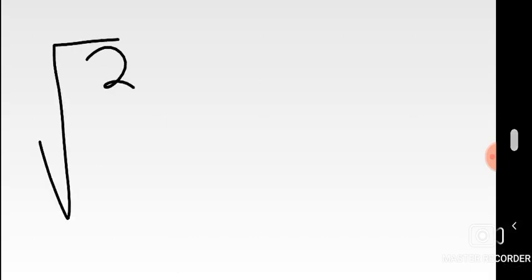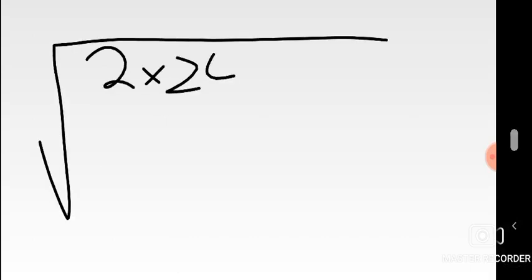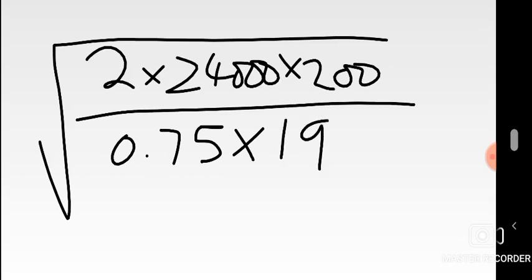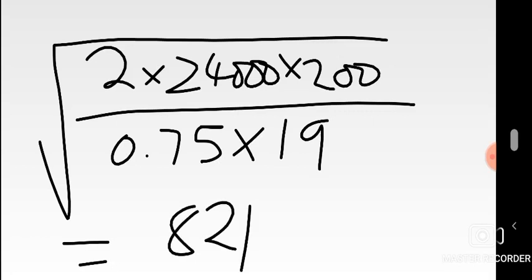Calculating EOQ: square root of (2 × 24,000 × 200) divided by (0.75 × 19). Showing your working clearly is important, especially for the carrying cost calculation expressed as a percentage — this is key to gaining full marks. The result gives an EOQ of approximately 821 units.